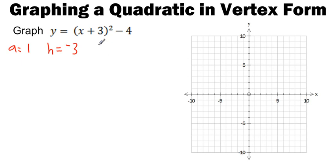So from this, now I can write my mapping rule. So remember your mapping rule. It's (x, y) goes to (x+h), so h is negative 3, so minus 3. ay, so a is 1, I don't need to write it. y plus k, so minus 4.